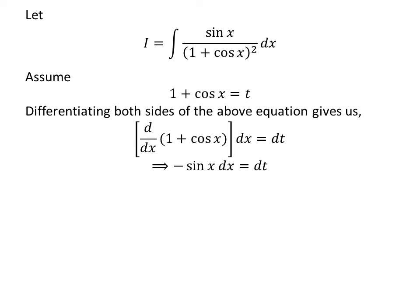As the derivative of constant 1 is 0 and derivative of cosine x is minus sine x, so minus sine x times differential of x is equal to differential of t.